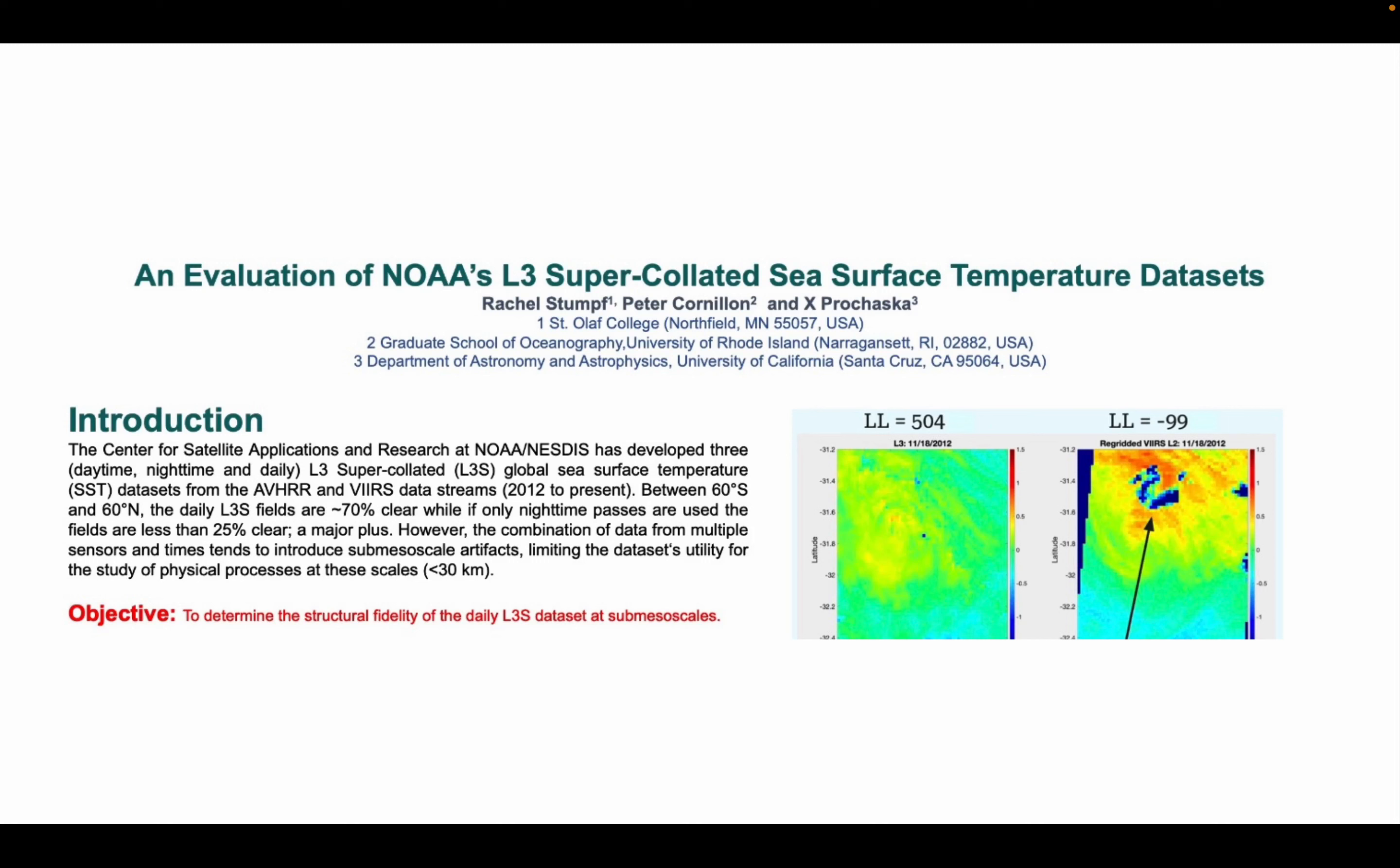The Center for Satellite Applications and Research at NOAA and NESDIS has developed three Level 3 Super-Collated Global Sea Surface Temperature Datasets: one daytime, one nighttime, and one daily. These were created from a combination of AVHRR and VIRS streams from 2012 through the present. The daily fields between 60 degrees west and 60 degrees north are about 70% clear or cloud-free, where the nighttime fields are less than 25% clear.